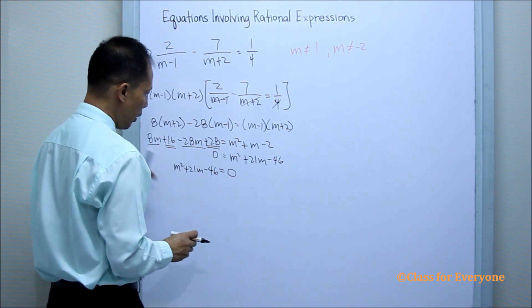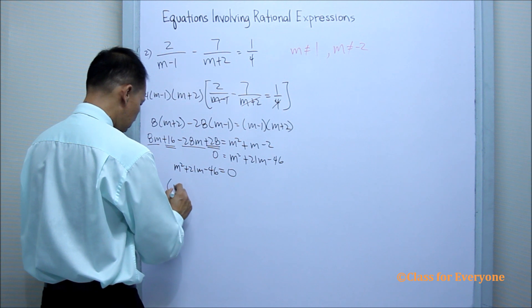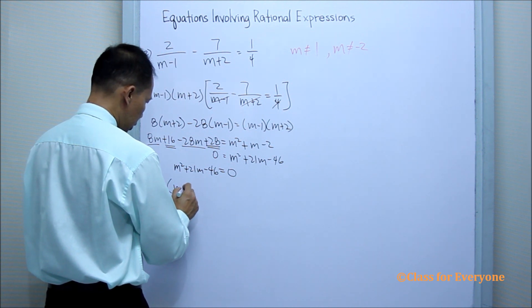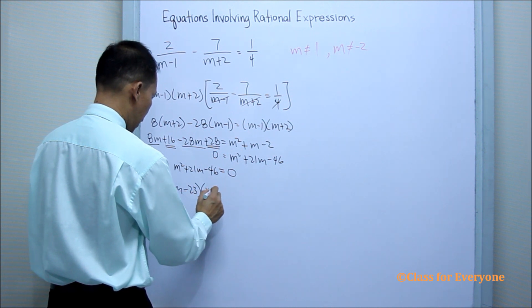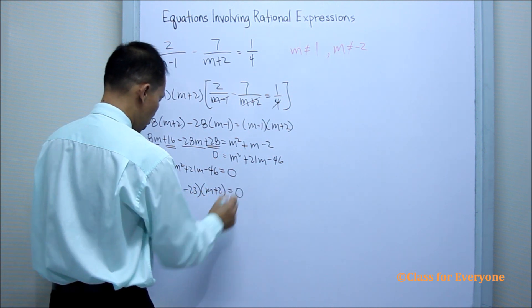Then by factoring, we will have m minus 23 and m plus 2 equals 0.